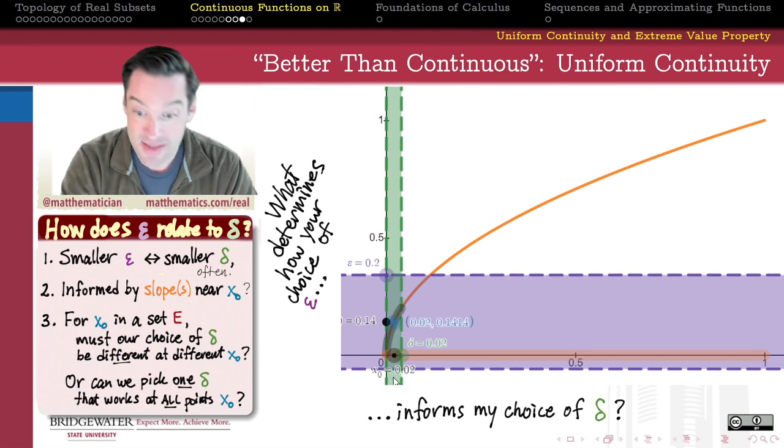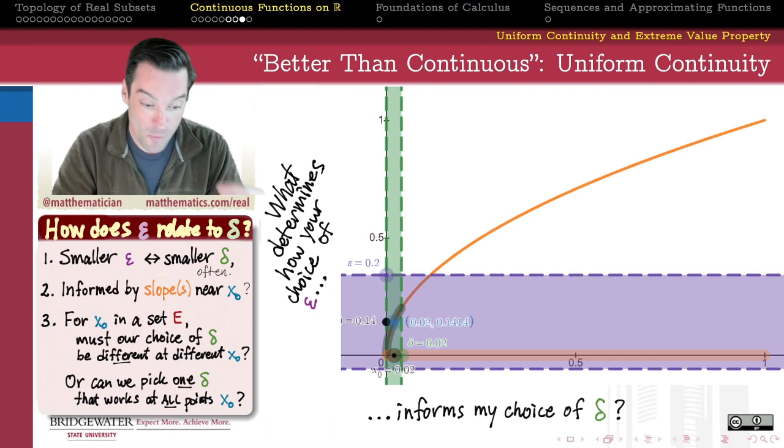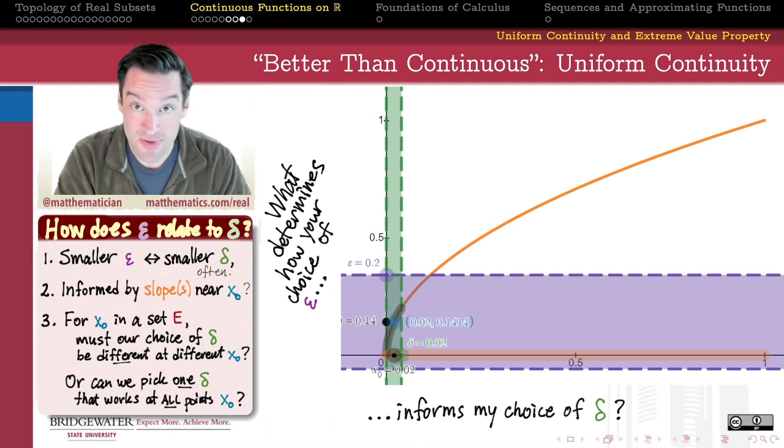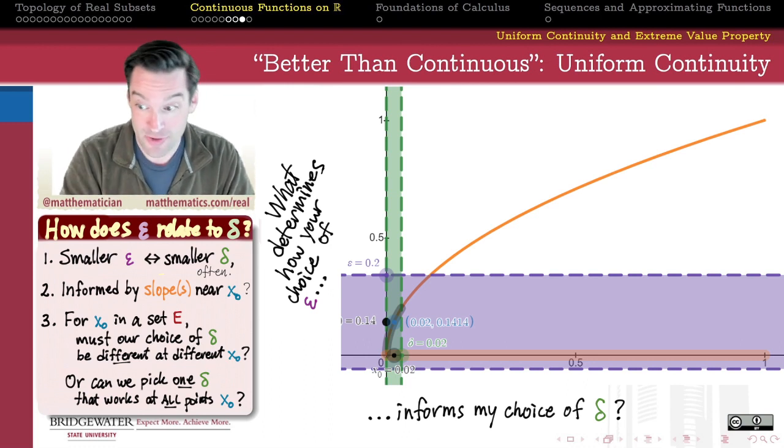And so this is a function whose continuity is nicer in some way. You don't need to tell me where I am in the domain for me to pick a delta in response to your epsilon. I can pick a single delta that works everywhere.